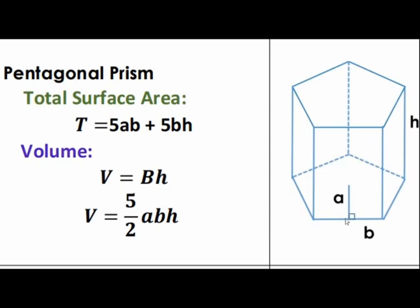Now, the total surface area of a pentagonal prism is the sum of the areas of all five rectangular faces and those of the two bases, which are congruent pentagons. The area of a pentagon with apothem A and base B is 5/2 times AB. Since there are two of them, that contributes 5AB. Also, the area of each rectangular face is BH, and since there are five of them, that contributes 5BH. Therefore, the total surface area is equal to 5AB plus 5BH.